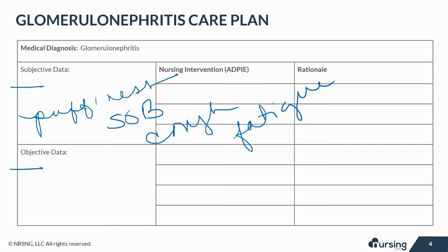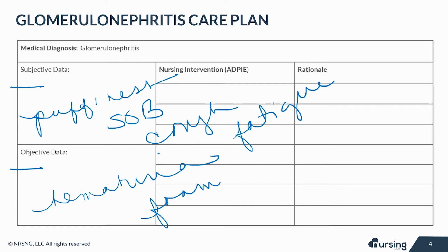Objective or measurable data may include hematuria, proteinuria, hyper- or hypotension, bubbly or foamy urine, and dark-colored urine.